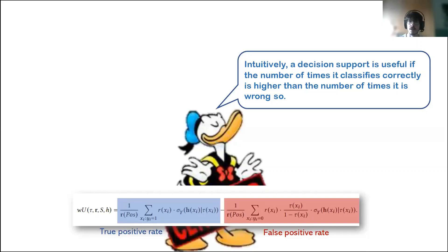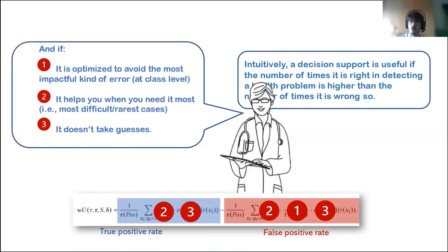So to start, from an intuitive perspective, it is clear the decision support and artificial intelligence system should be considered useful only if the number of times it gives correct classification is greater than the number of times it gives wrong classifications. This is a very obvious property and it is the property that every accuracy measure actually takes into consideration. However, to this dimension, we also add other three properties. The first is that the artificial intelligence system should be optimized to avoid the most impactful kind of error.